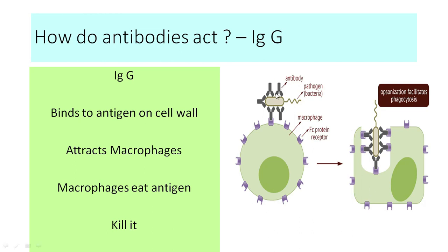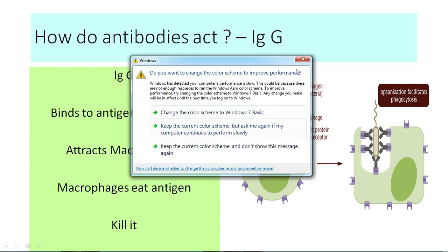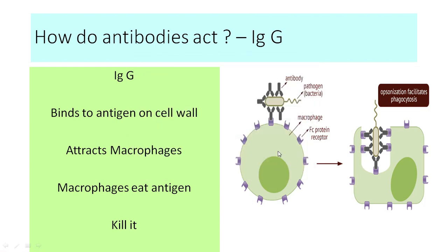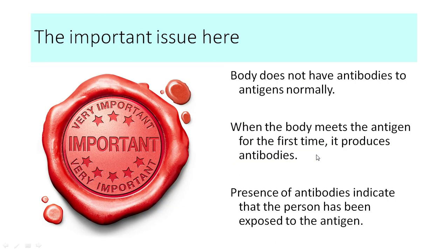IgG, on the other hand, does not act by forming a membrane attack complex. Instead, it binds to the bacteria — a process called opsonization. It has a constant Fc portion which macrophages recognize; the macrophages bind to the Fc region of the immunoglobulin and then engulf and destroy the bacteria. So IgG calls in macrophages, which attach to the Fc region and kill the bacteria.